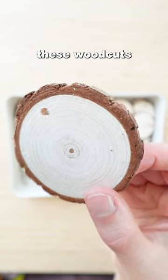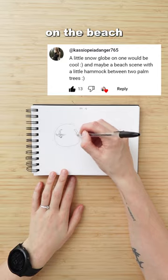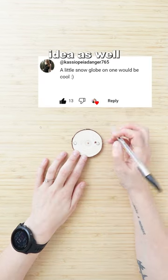I've been making your ideas on each of these woodcuts I found. Today I'm going to do two palm trees with a hammock in between on the beach. Thank you for your amazing idea. I'll definitely also do the snow globe idea as well.